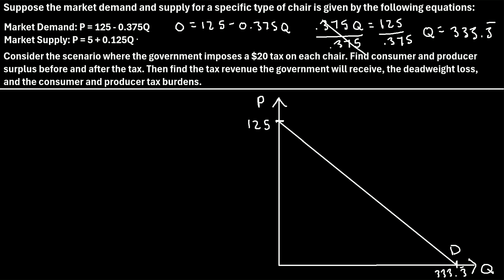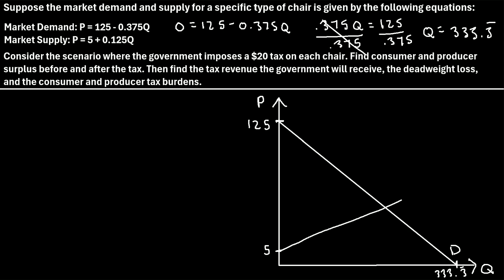Next, we can do the same process to graph our market supply. If we plug in a 0 for Q, we see that P is equal to 5. If we consider the equation Y equals MX plus B, the slope of this equation is 0.125, so that's a positive slope. This market supply is just going to be positive upward sloping. Let's label that as our supply curve.